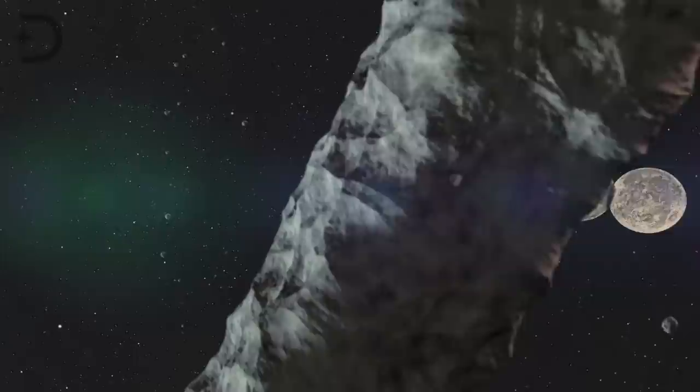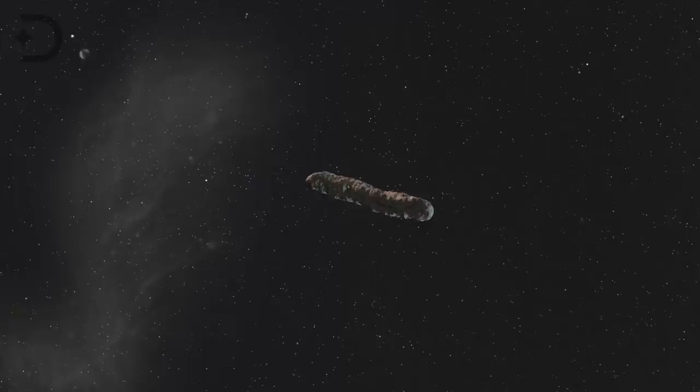The planet formed around the red dwarf's companion, but its orbit was destabilized and the planet swung past the red dwarf, about to be hurtled into interstellar space, and was torn apart by the incredible gravitational forces.